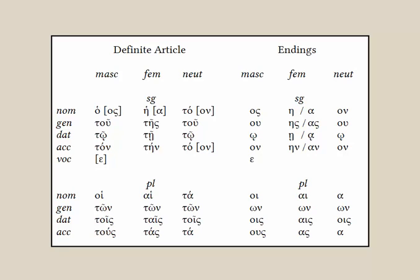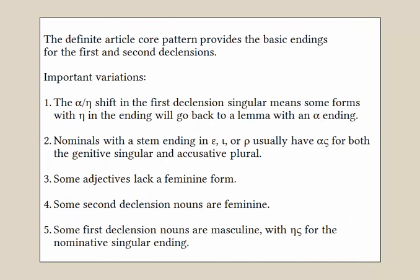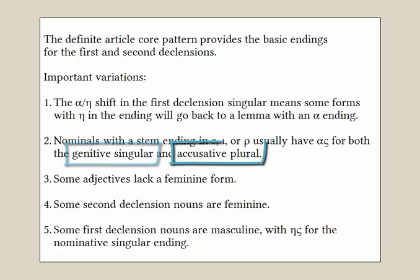So that's an overview of the main features of the first and second declensions. I'm suggesting you become thoroughly familiar with this core pattern and the variations we've reviewed, and then look over a few further details in the book. Here's a summary of what we've seen in these first two videos. We've seen that the definite article is our core pattern along with those five brackets for the first and second declensions, and there are important variations of that core pattern to keep in mind — the alpha-eta shift, which we looked at for the first declension singulars.